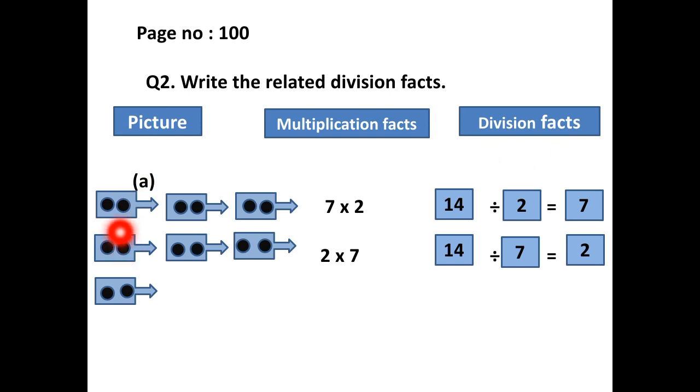Now, look and see how many boxes are there. 1, 2, 3, 4, 5, 6, 7, 8, 9. So we have 7 boxes. And in a box there are 2 circles. So what is 2 × 7? 14. 2 × 7 is 14 and 7 × 2 is 14.